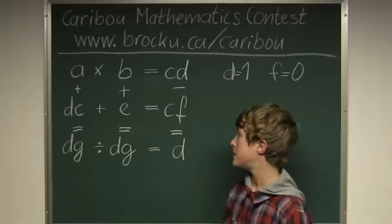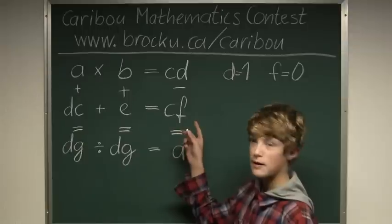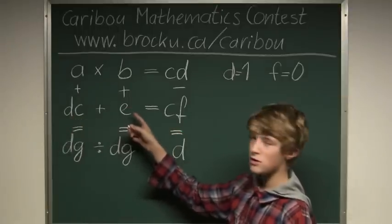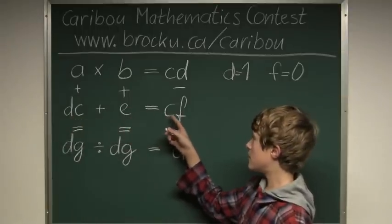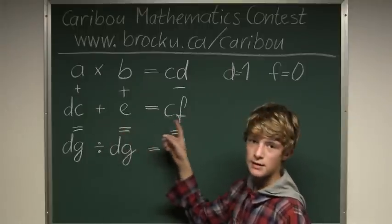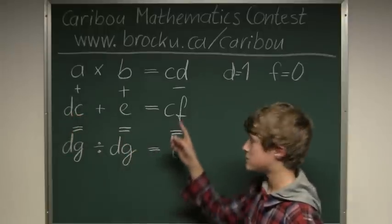The next special case would be DC plus E equals CF. Since D is 1 in the tens column plus a single digit number, and since C is a different letter than D, C has to equal 2 because it's 1 bigger than D. So C equals 2.